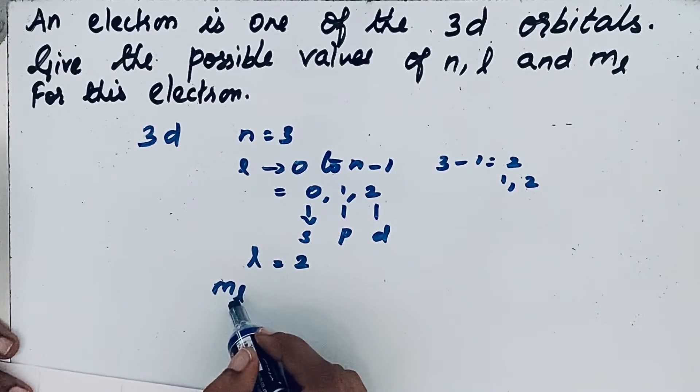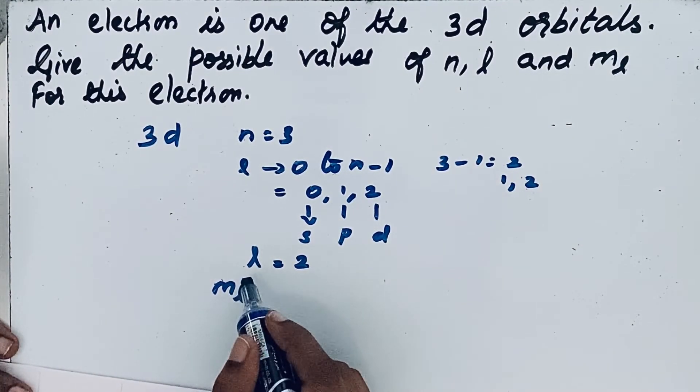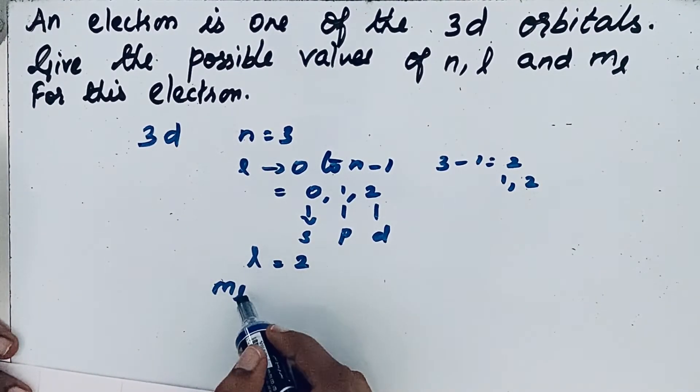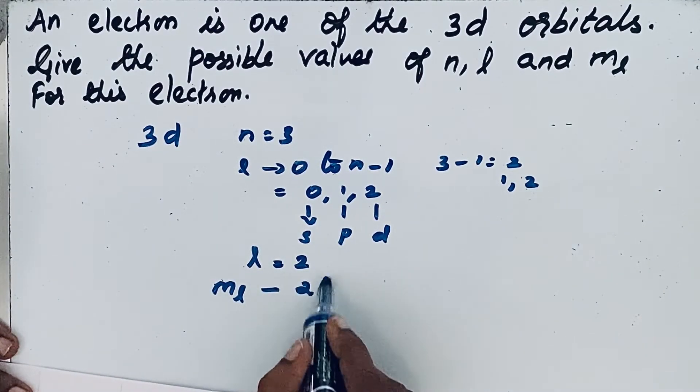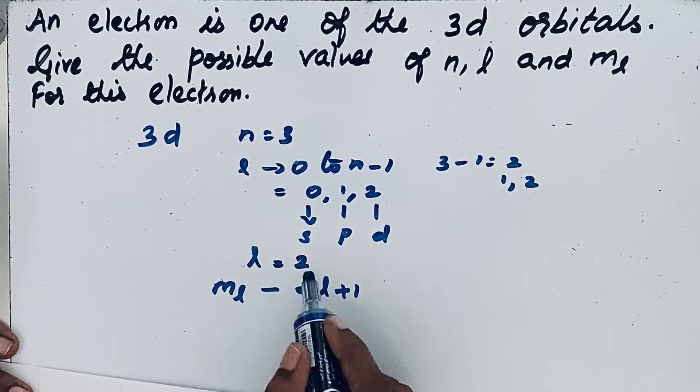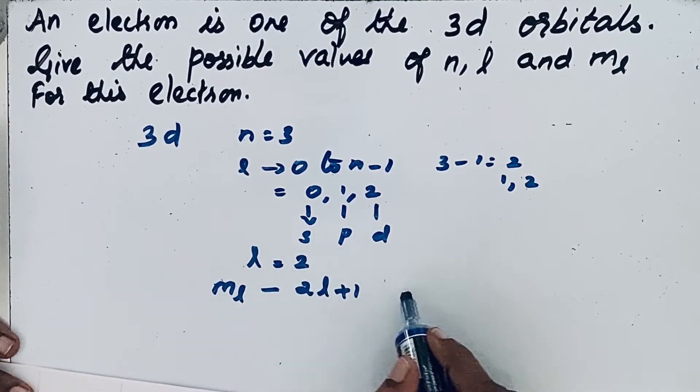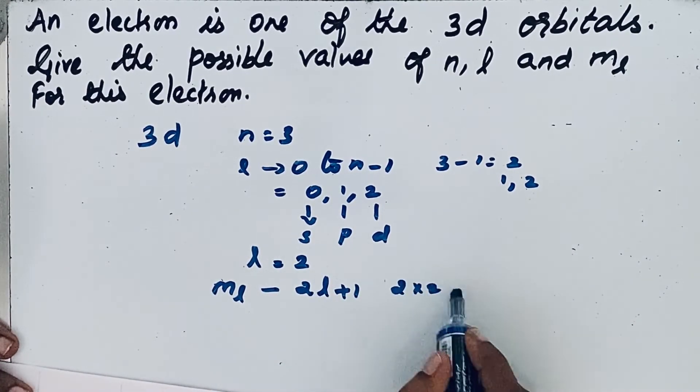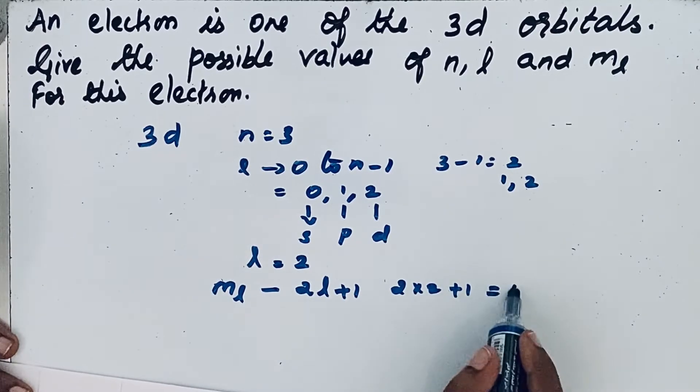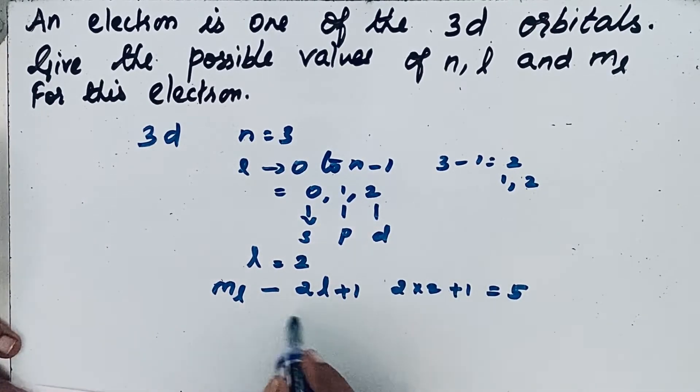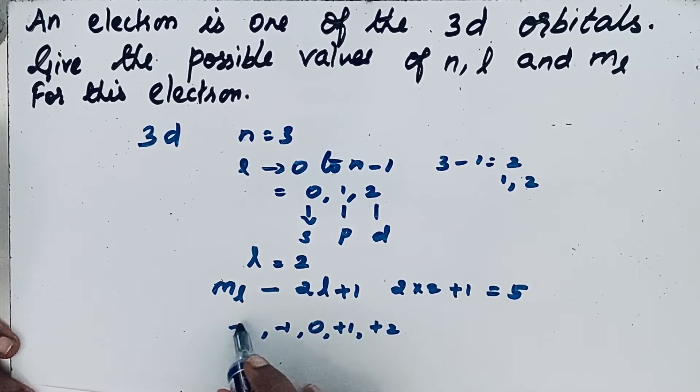For ml, it is a magnetic quantum number which is related to l, the azimuthal quantum number. So ml equals 2l plus 1. Here l for 3d orbitals is 2, so 2 times 2 plus 1 equals 5. So if ml values are 5, then the possible values are 0, plus 1, minus 1, plus 2, minus 2.